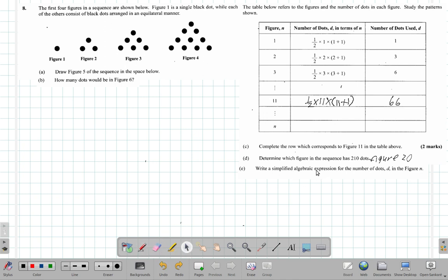Let me just move this in a neater line, line it up below C, D, and E. Good, let me make it look better. All right, write a simplified algebraic expression for the number of dots D in figure n.